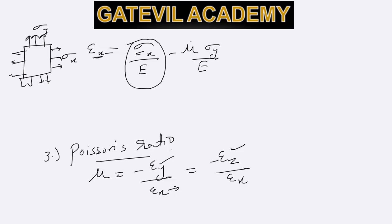This is the strain due to sigma y in the x direction. Similarly, epsilon y is represented by sigma y by e minus mu sigma x by e. Here both sigma x and sigma y are assumed to be positive.